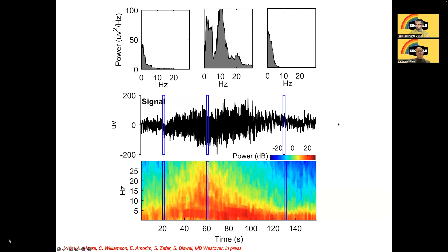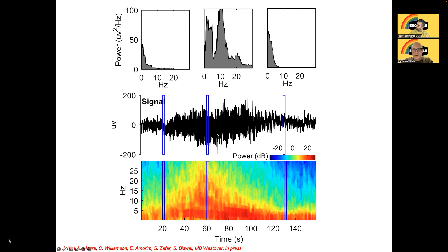Now we're going to move from spectra to spectrograms — that's why we have rainbows in here today, because we usually use rainbow colors for spectrograms. Let's look at the middle signal first: it's more than 140 seconds long. You can't appreciate it well because it's so squished, but there's a seizure happening in there. This is why we don't usually look at EEG data at this scale — we usually look at 10 or 15 seconds at a time.